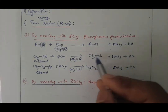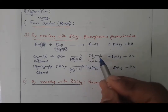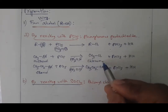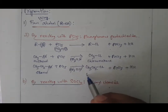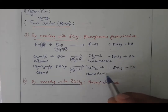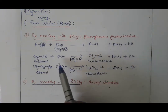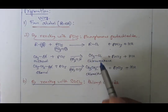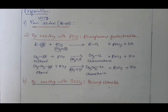The IUPAC name of methyl chloride is chloromethane (one chloro, one carbon). The IUPAC name of ethyl chloride is chloroethane (one chloro, two carbons). When you use PCl5, you always get a chloride compound — not bromide or iodide.